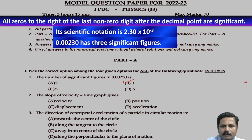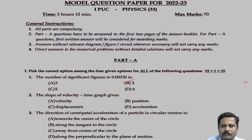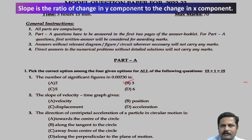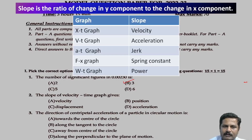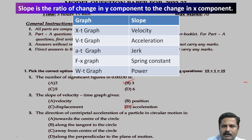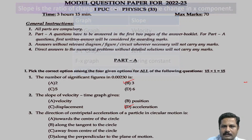Next, the slope of the v-t graph gives us — the slope means it is the ratio of change along the y-axis to the change along the x-axis. We have to consider the dependent quantities along the y-axis and independent quantities along the x-axis. In the given question, the slope of the v-t graph gives us acceleration, because v divided by t gives us acceleration. So we can mark D as the correct answer.